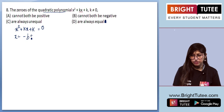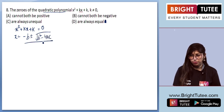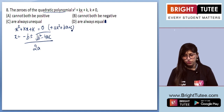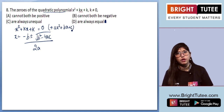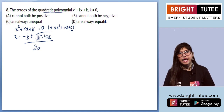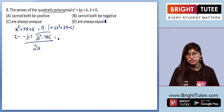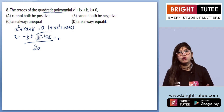We use the quadratic formula: x = [−b ± √(b² − 4ac)] / 2a. Comparing with ax² + bx + c, we get a = 1, b = k, and c = k.